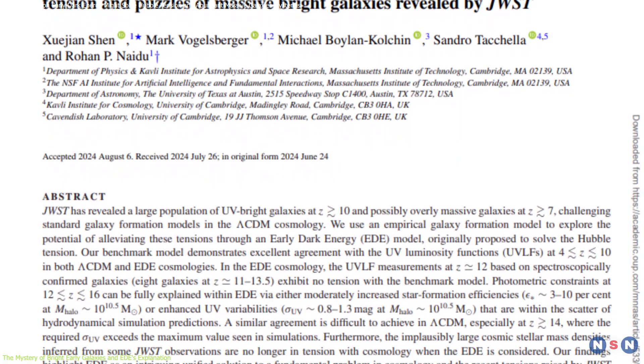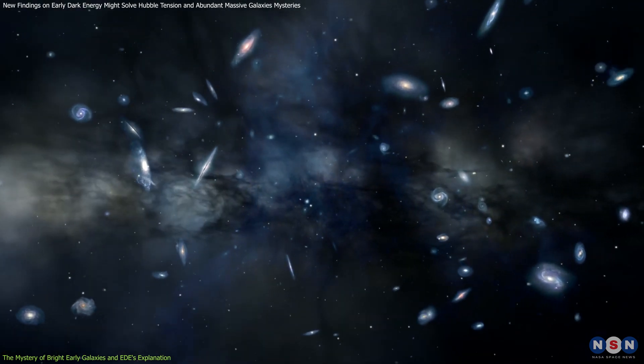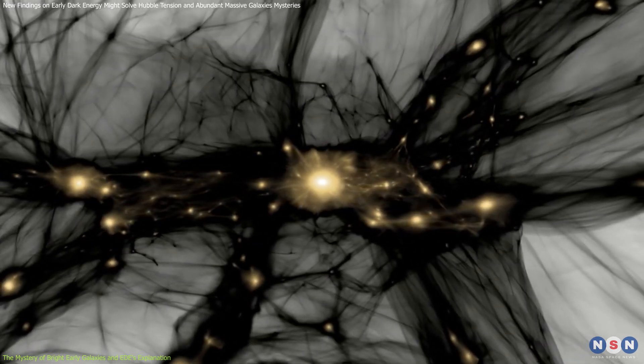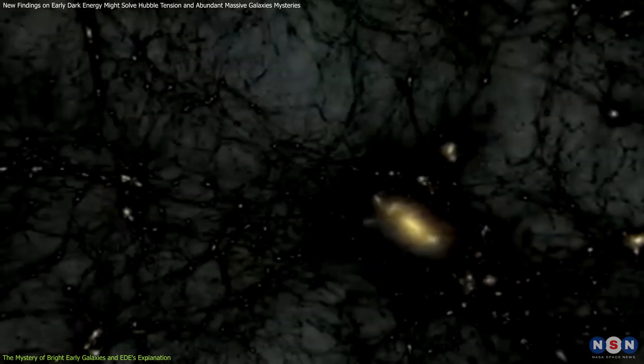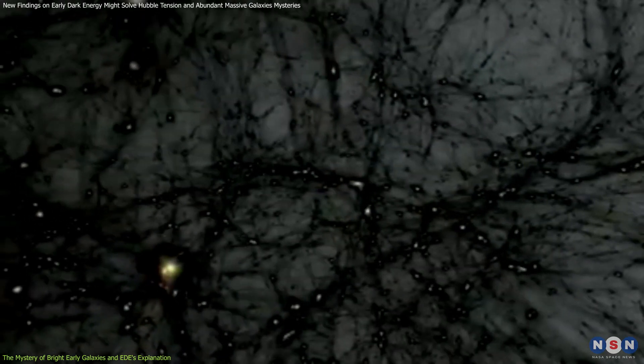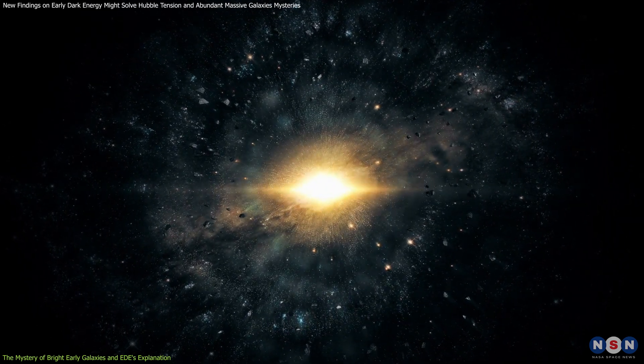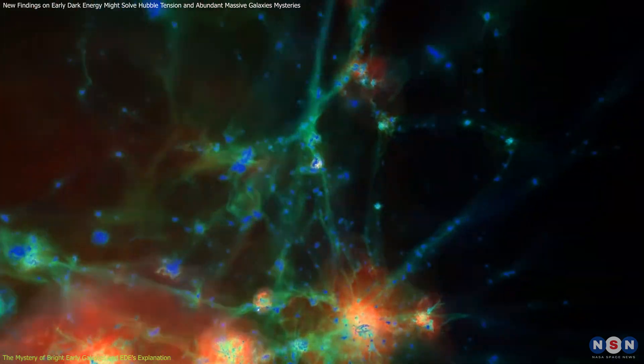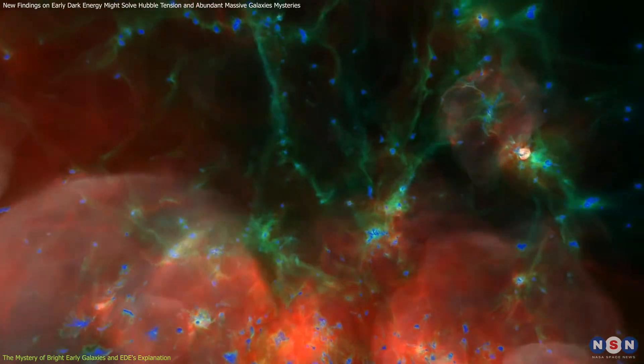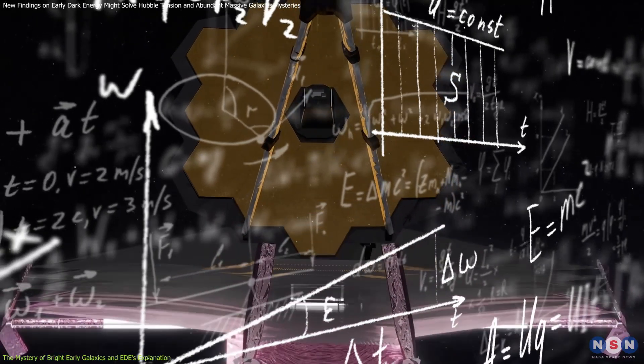According to a recent MIT study, early dark energy might be the key to explaining these unexpected observations. In the absence of early dark energy, dark matter halos, which act as the invisible skeleton around which galaxies form, would develop more gradually, resulting in fewer large galaxies in the early universe. However, if early dark energy existed, it could have caused larger density fluctuations, speeding up the formation of these halos. This would result in a more dynamic, rapidly expanding early universe, allowing galaxies to form faster and more abundantly, aligning theoretical models with Webb's findings.